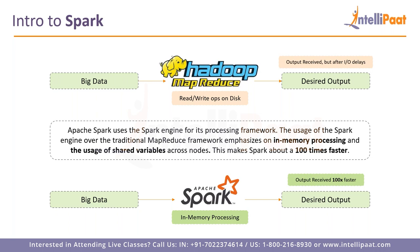As RAM became cheaper — today mobile phones have 64 GB of RAM — Apache Spark addressed this I/O delay problem. The Spark engine emphasizes in-memory processing and usage of shared variables across nodes, making Spark about 100 times faster than traditional MapReduce. For small datasets the difference isn't noticeable, but for terabyte-to-petabyte datasets, the speed improvement is dramatic.